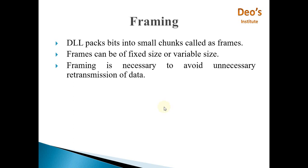One of the jobs of the data link layer is to perform framing. A frame is nothing but bits grouped into small chunks, and they are called a frame. A frame can be of fixed size or variable size. Framing is necessary to avoid unnecessary retransmission of data. If you pack entire bits in a single frame and send it to the receiver, and if that packet gets lost or corrupted,